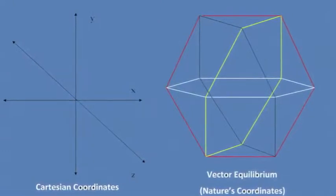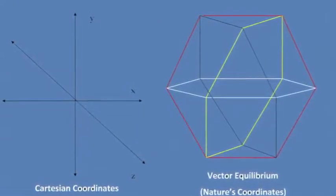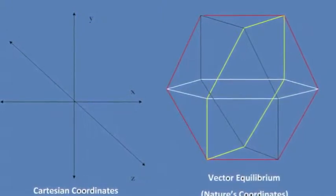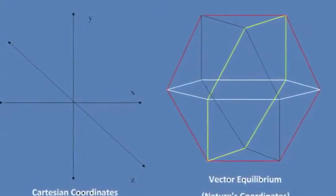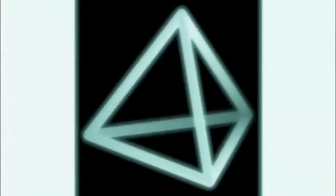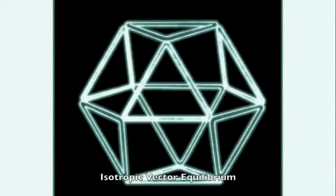Euclid and his plane geometry are wrong, according to RBF. Nature's geometry is much simpler and more soundly designed, as depicted by certain fundamental shapes, specifically the triangle, tetrahedron, octahedron, and isotropic vector equilibrium.